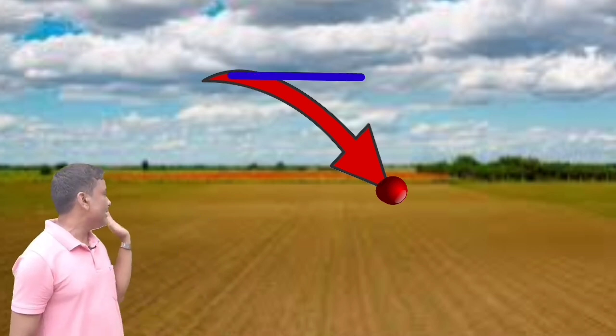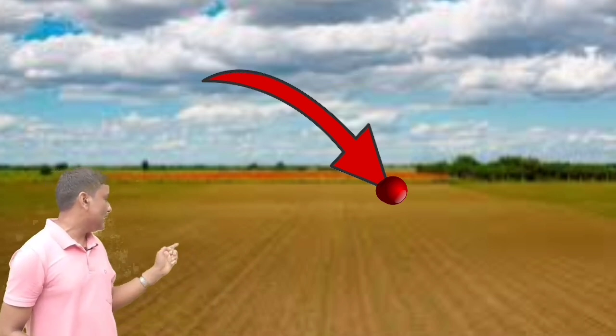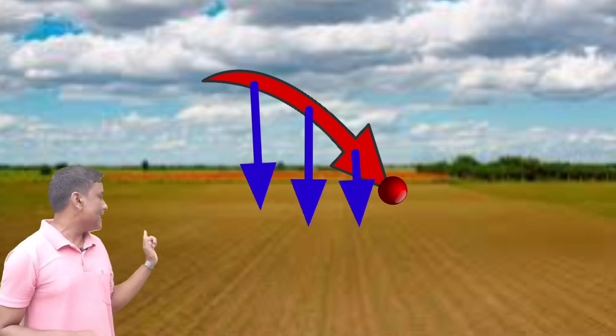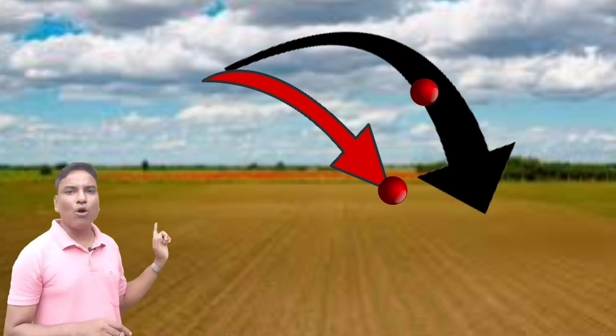Because we have given an initial velocity in this direction, and the gravitational force of Earth is continuously pulling the ball in this direction. And the result of this, the ball takes a curved path. Now, if I apply more force in throwing, then the ball will go further away and it takes more curved path.